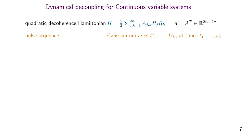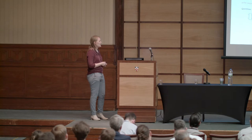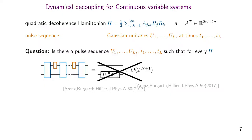Now we can ask how to define dynamical decoupling in this setting. We restrict to quadratic Hamiltonians and take Gaussian unitaries as our pulse unitaries. The first ansatz would be to define it similarly to the qubit setting: a pulse sequence would be called an nth-order dynamical decoupling scheme if for every such quadratic Hamiltonian we could achieve that the joint unitary is approximately equal to some product unitary acting trivially on the system. However, the answer is no — you cannot find pulse sequences which render the evolution trivial for every such quadratic Hamiltonian, so perhaps we demand too much and need to restrict further.